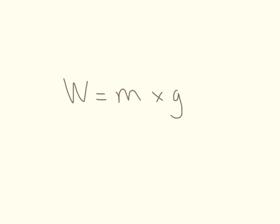Here we have weight equals mass times gravity. So you should remember that weight is in newtons and mass is in kilograms. Gravity, you should remember that the number for it is 10. But if you can't remember what the units are, we can just rearrange the equation.